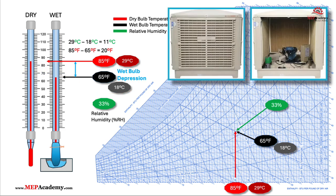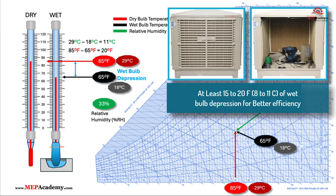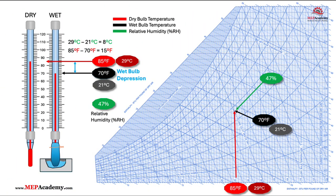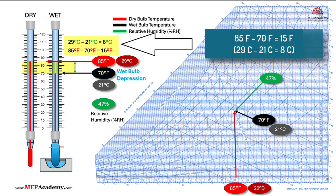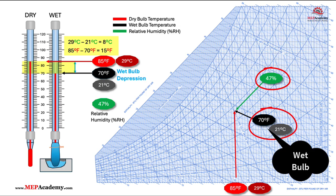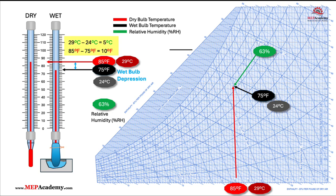For efficient use of a swamp cooler or evaporative cooler, a wet bulb depression of at least 15°F to 20°F (8 to 11°C) or more is generally required. This means the difference between the dry bulb temperature and the wet bulb temperature should be at least 15°F (8°C), indicating low enough humidity for effective evaporation and cooling. Evaporative cooling is best suited for hot, dry climates with low humidity. With a 15°F (8°C) wet bulb depression, the relative humidity has reached 47% at a 70°F (21°C) wet bulb. With a 10°F (5°C) wet bulb depression, the relative humidity has reached 63% at a 75°F (24°C) wet bulb.